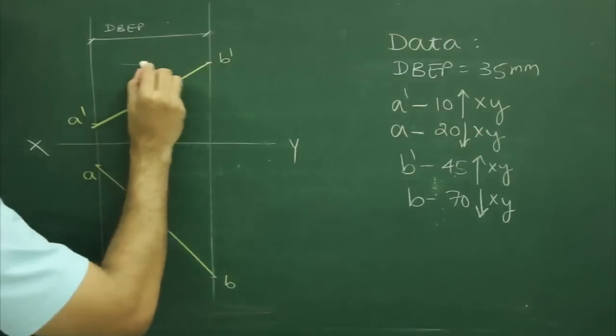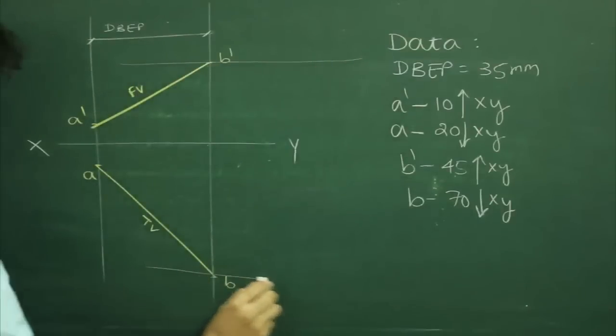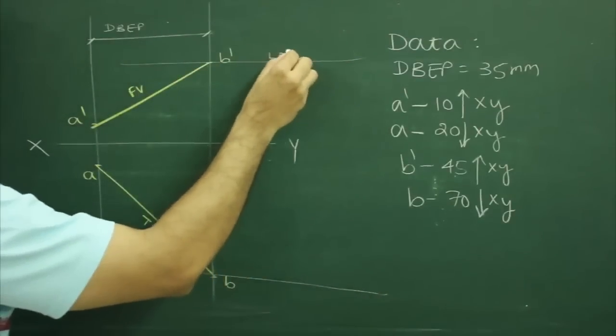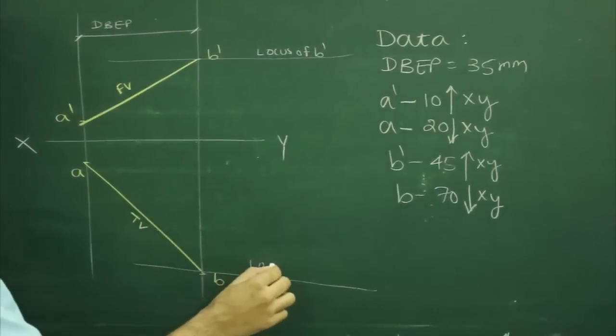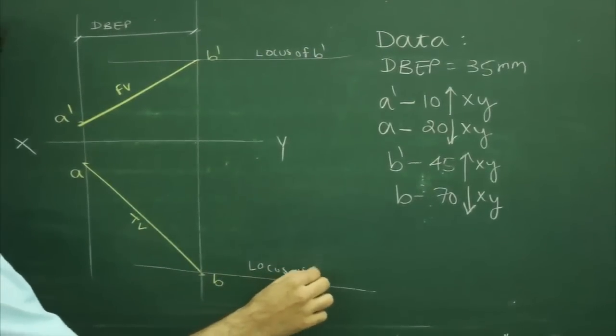Then we will draw horizontal line from B' as well as B. This will be locus of B' and this is locus of B.